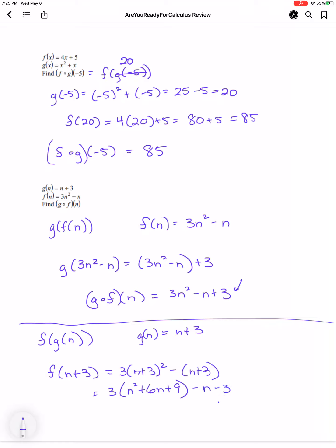Minus n minus 3, which is equal to 3n squared plus 18n plus 27 minus n minus 3, giving me a final result for f of g of n to be 3n squared plus 17n plus 24.